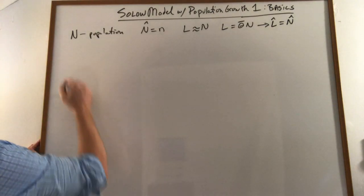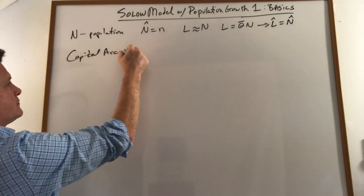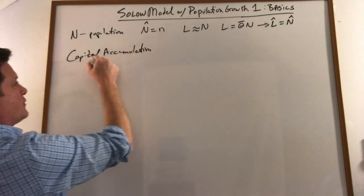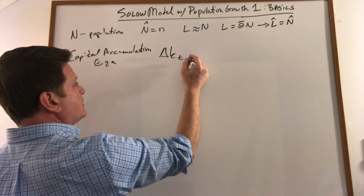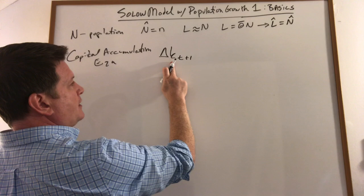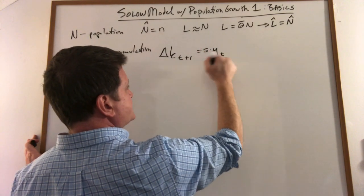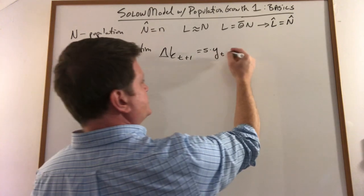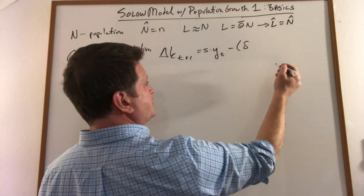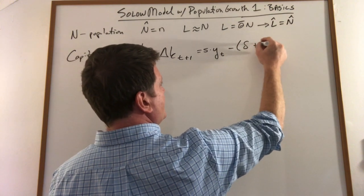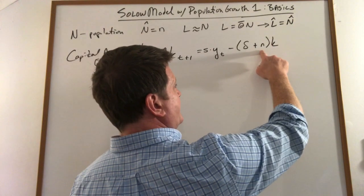The key capital accumulation equation in this model is that capital per worker is going to be the savings rate times production which is your investment amount minus we used to just put delta and k but now it includes n for the population growth rate.